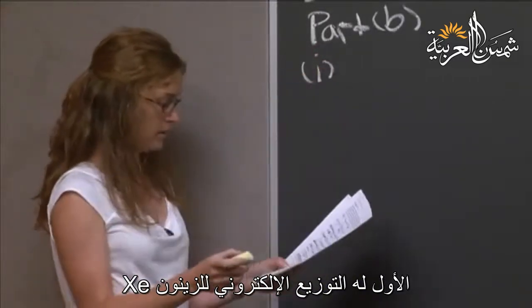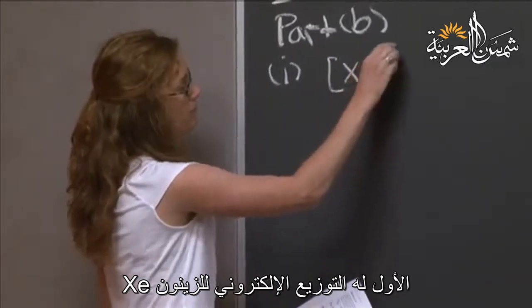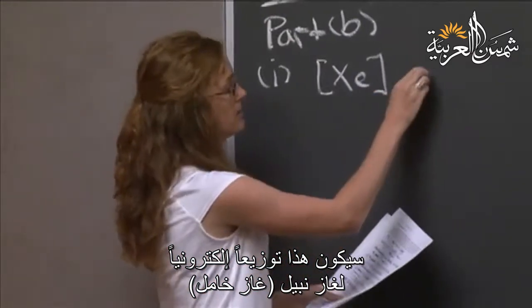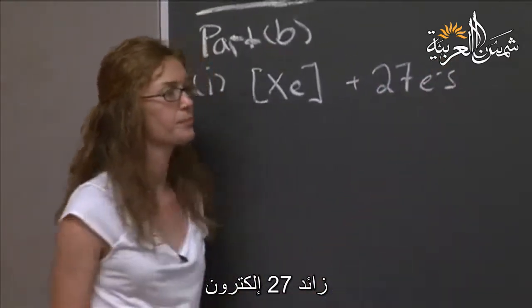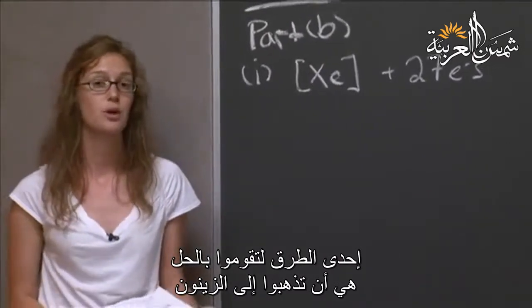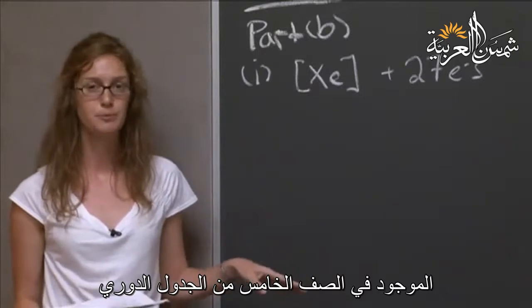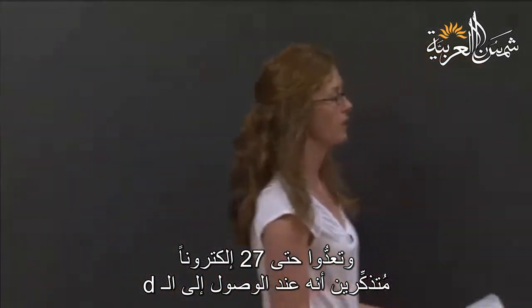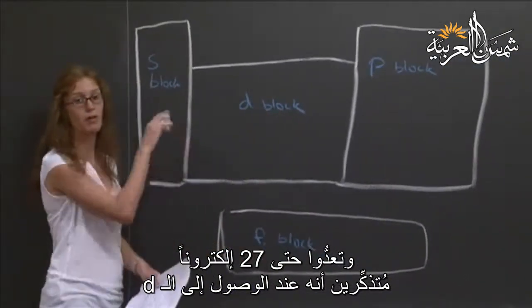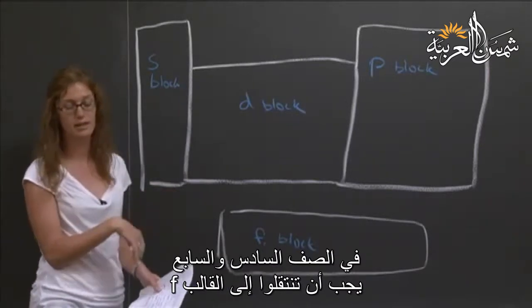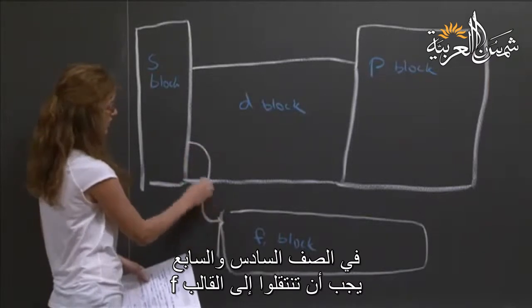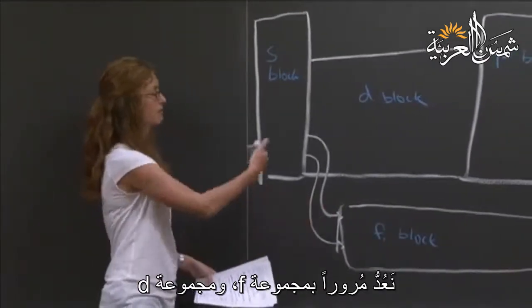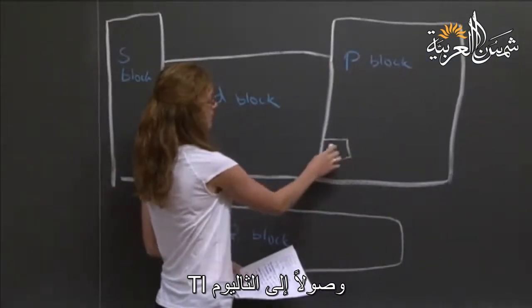The first one has the electron configuration of xenon, so this is the noble gas configuration, plus what turns out to be 27 electrons. One way you can do this is to go to xenon, which is in the fifth row of the periodic table, and count through 27 electrons, just remembering that when you get to the sixth and seventh row, you need to go to the F block, which is signified in this problem by having F block electrons. Count through the F block, the D block, and end up at thallium.